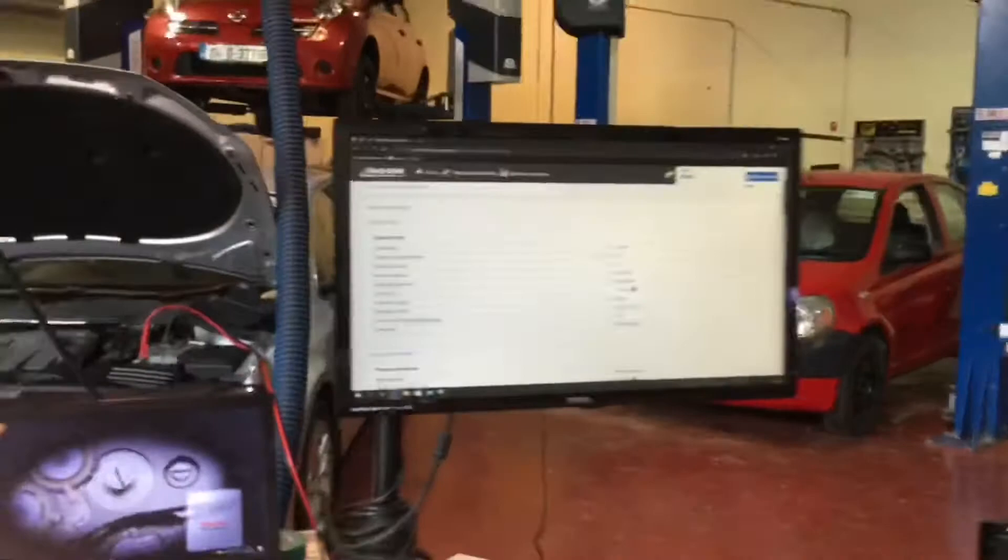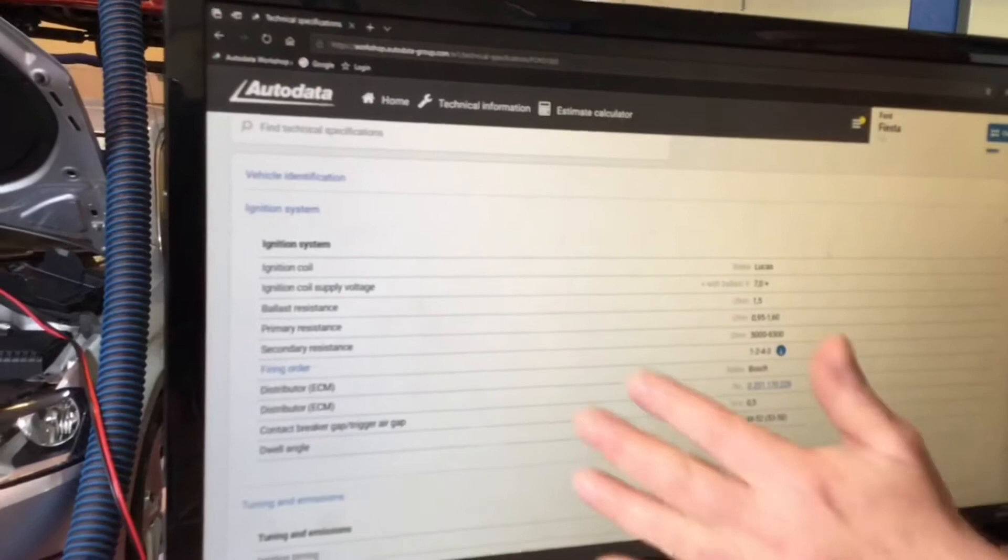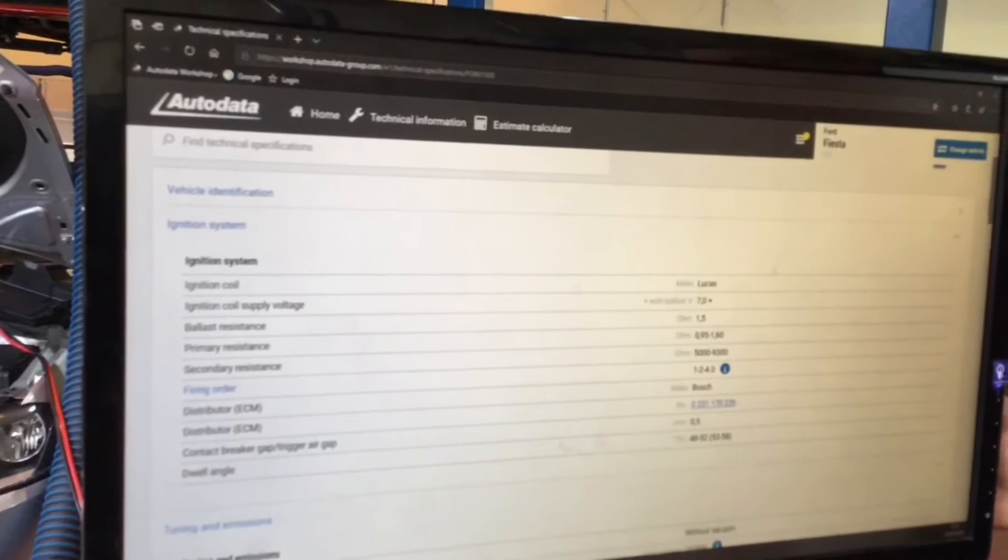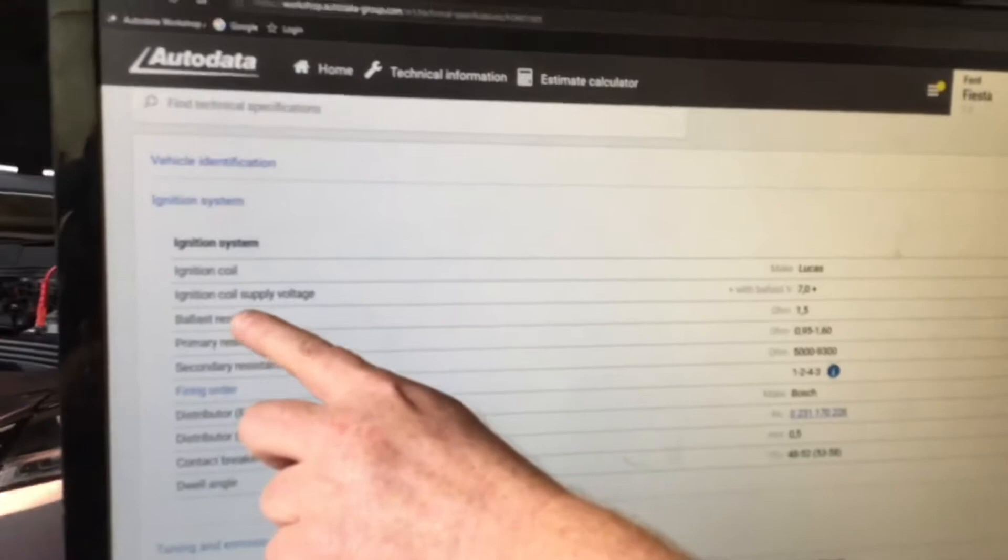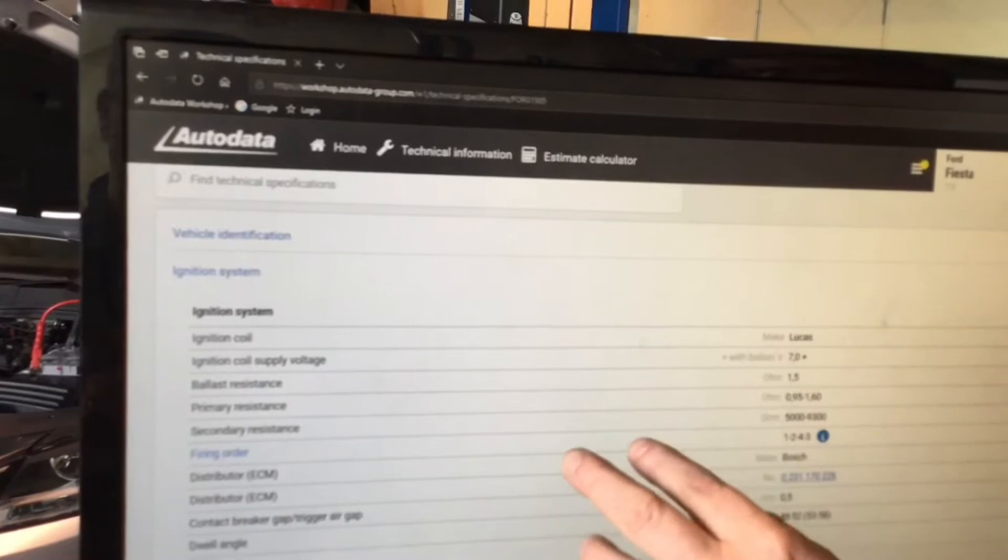We've got in, we've picked our engine. It's a Ford Fiesta, one liter, it's an old engine, 1982, and we've gone into the technical data on it. What we really want to have a look at here is the ignition system. If we follow down, it tells us ignition coil type, coil supply voltage 7 volts plus.